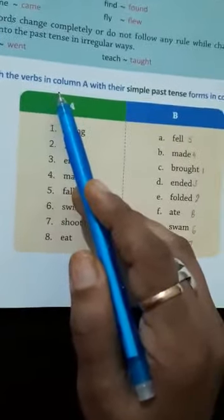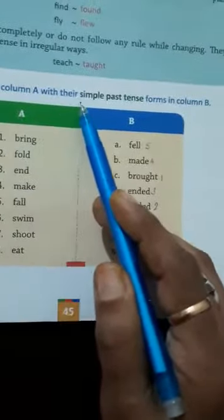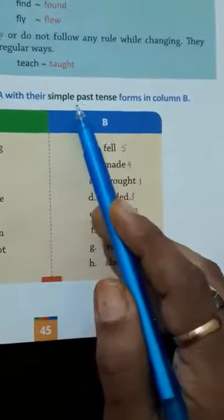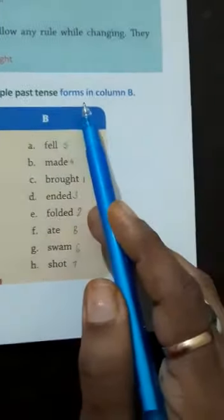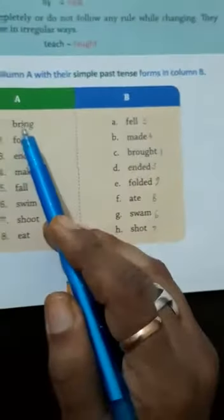Match the words in column A with their simple past tense forms in column B. Now you will match words that change in simple past tense.